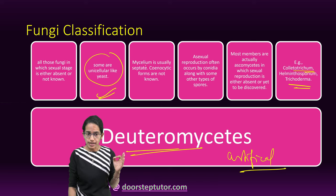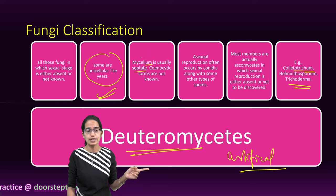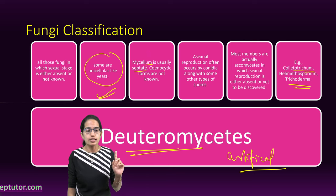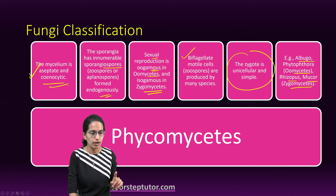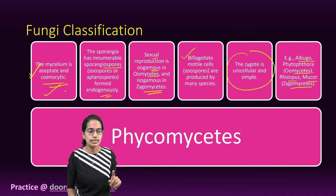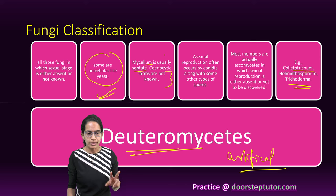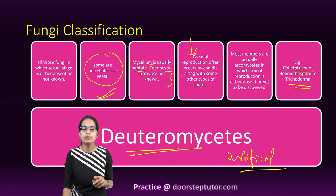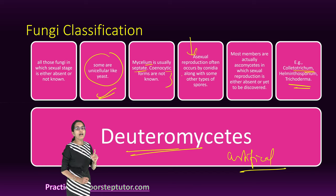The mycelium of Deuteromycetes is septate, unlike Phycomycetes which is aseptate and coenocytic — so that is one major difference. Asexual reproduction occurs here through conidia. Most members show no form of sexual reproduction; either it is not known or it is absent.